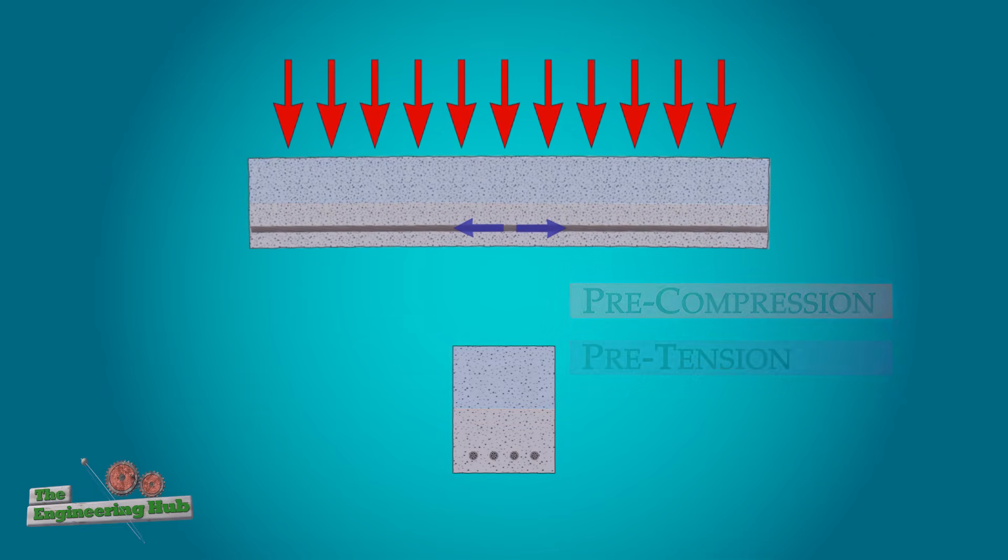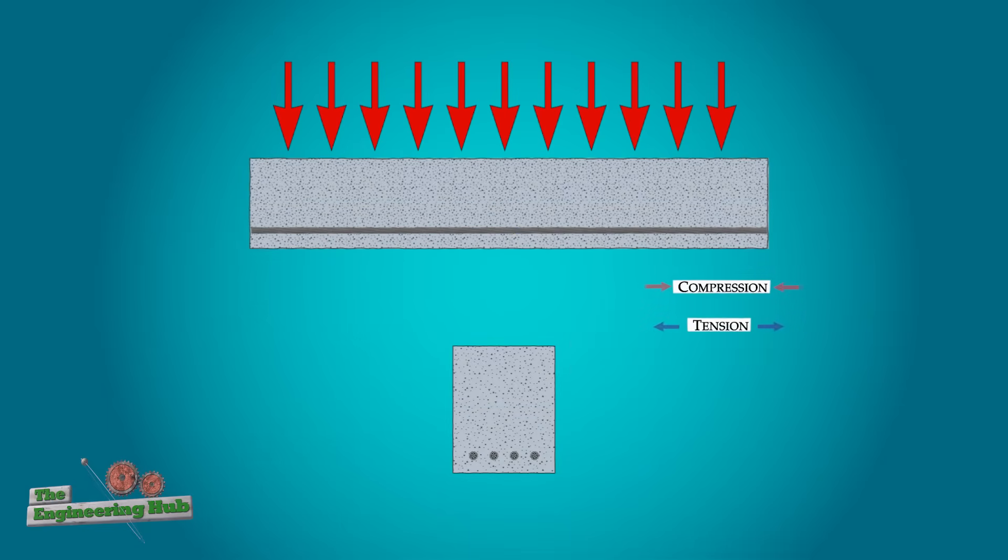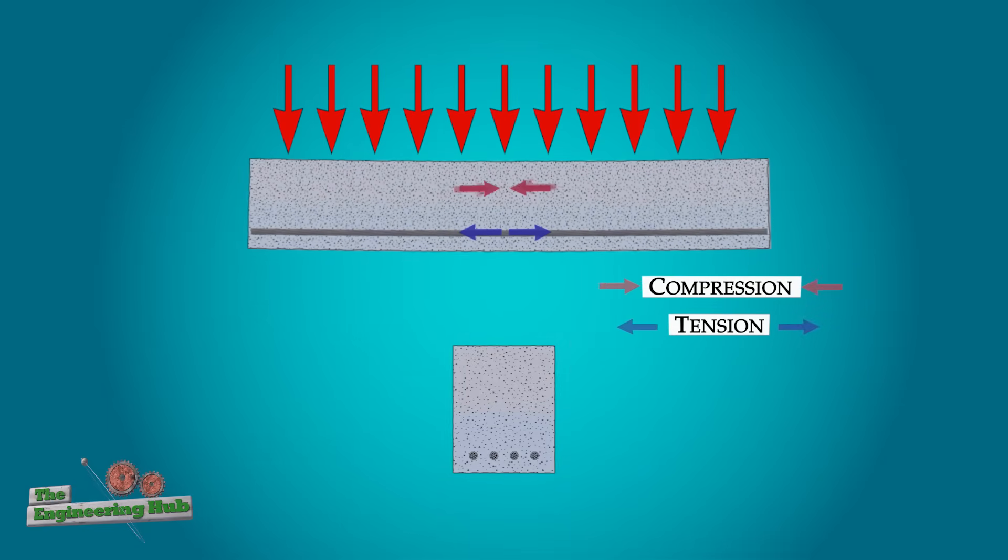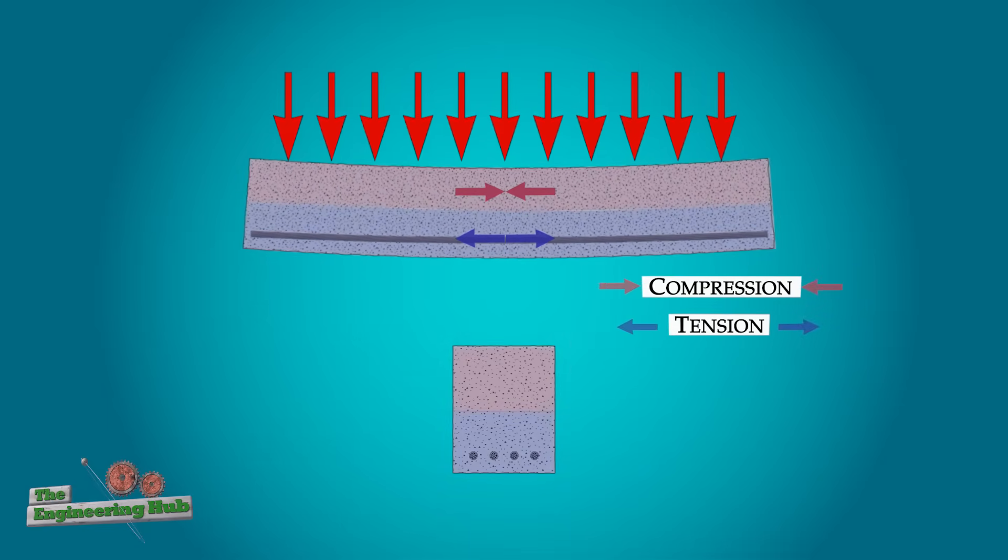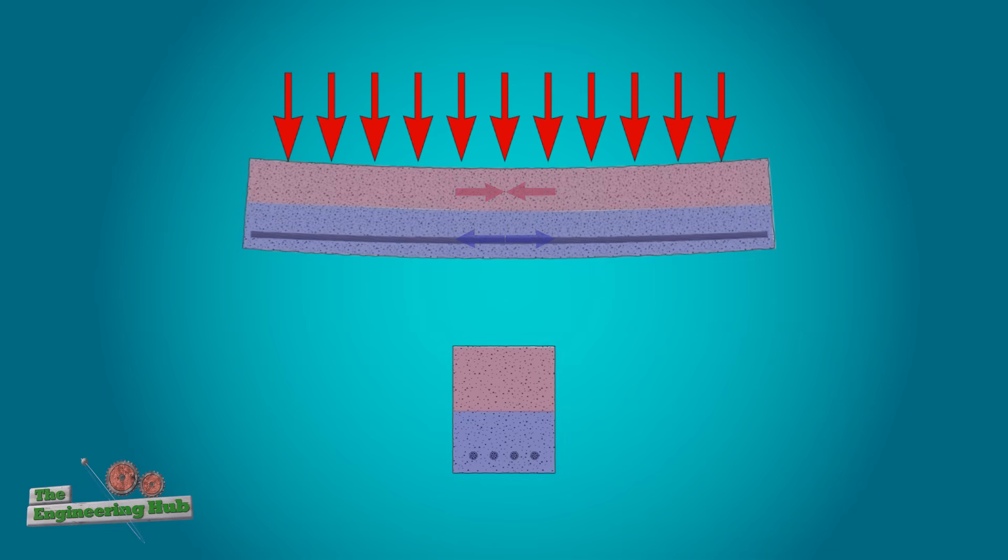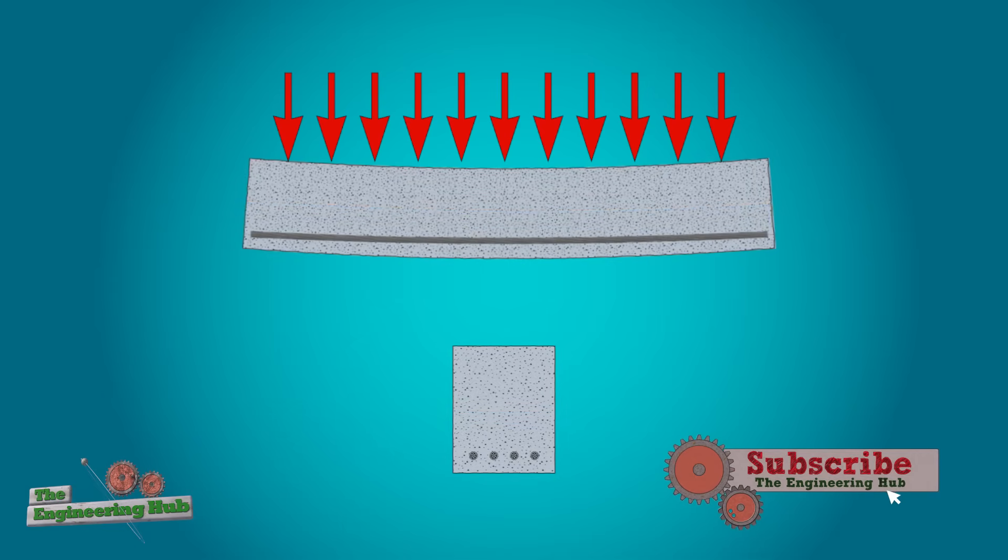Once the beam begins taking load, it still applies tension on the bottom half, but this time, the tension has to cancel out some pre-stressed compression before creating a zone of net tension. In this way, the pre-stressed beam is able to take more load than the traditionally reinforced concrete one, all else equal.